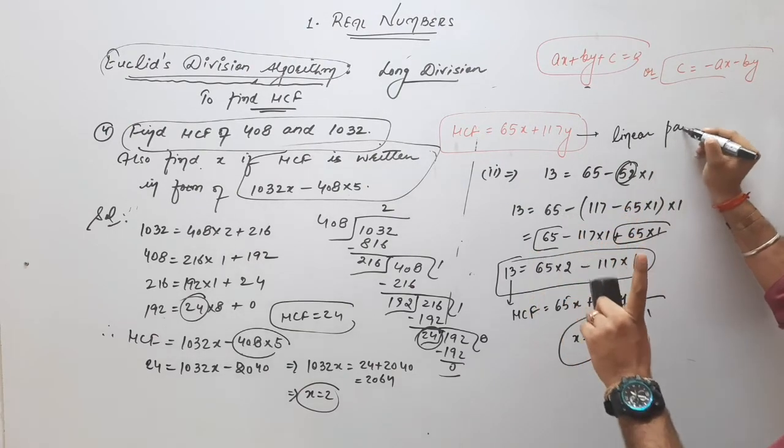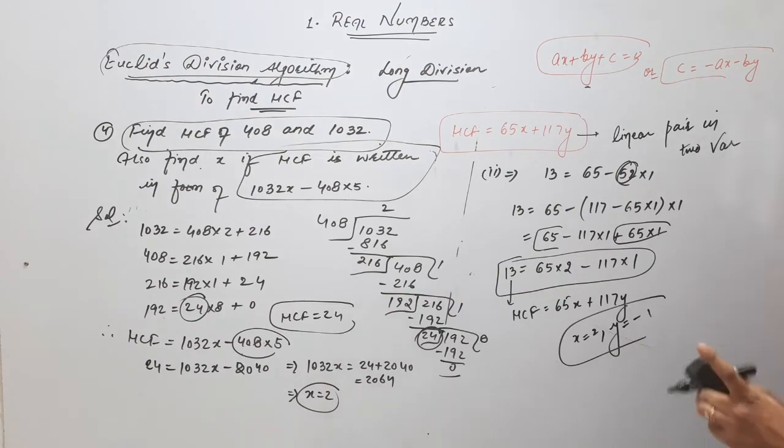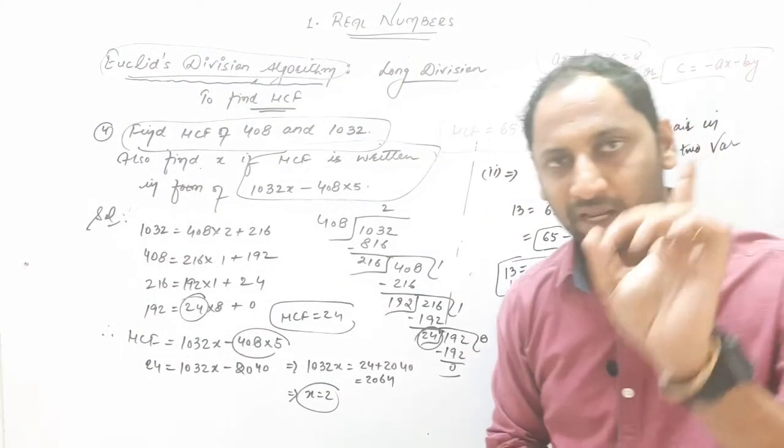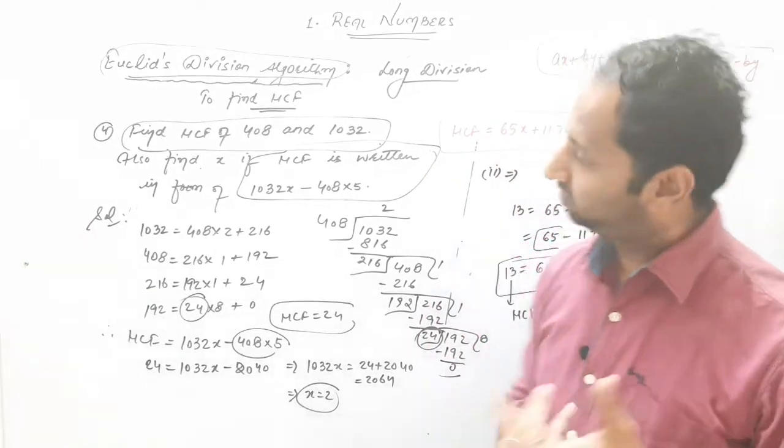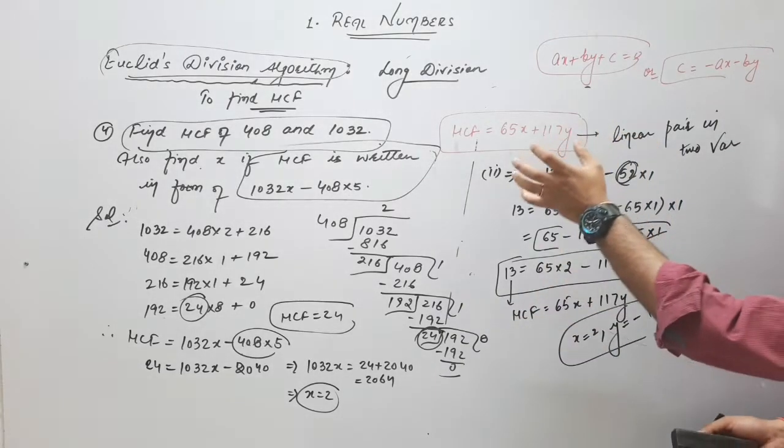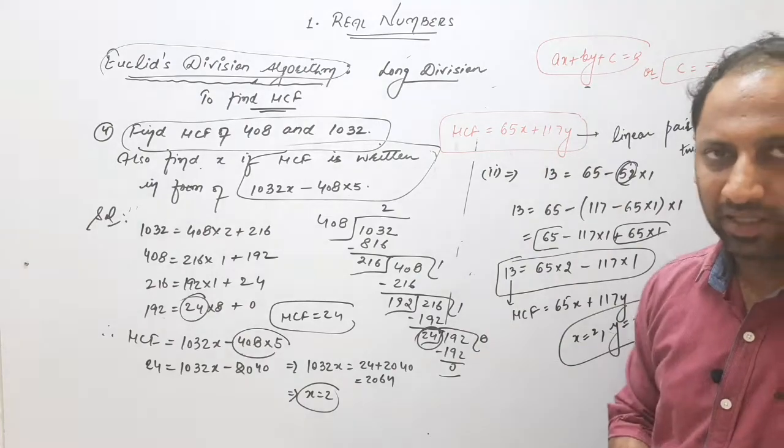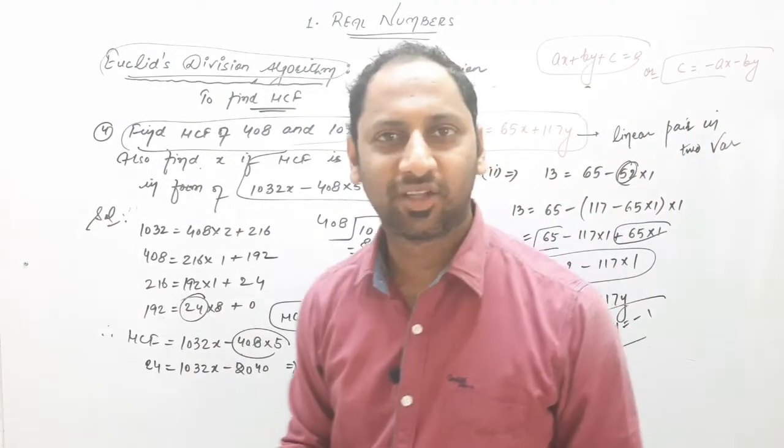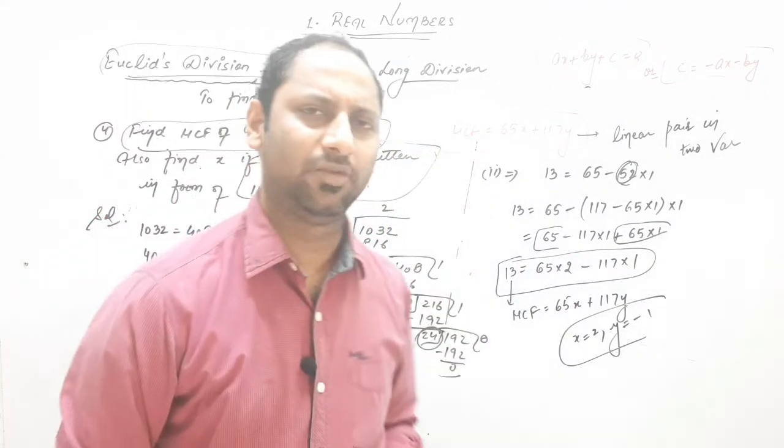One more thing very important. This is linear pair in two variables. In ninth class we have done, a linear equation in two variable has infinitely many solutions. Am I right? Same here. So if question came is unique or no, reason because this is a linear variable in two variables, we can find infinitely many solutions. Here this is not unique, here infinite values come.